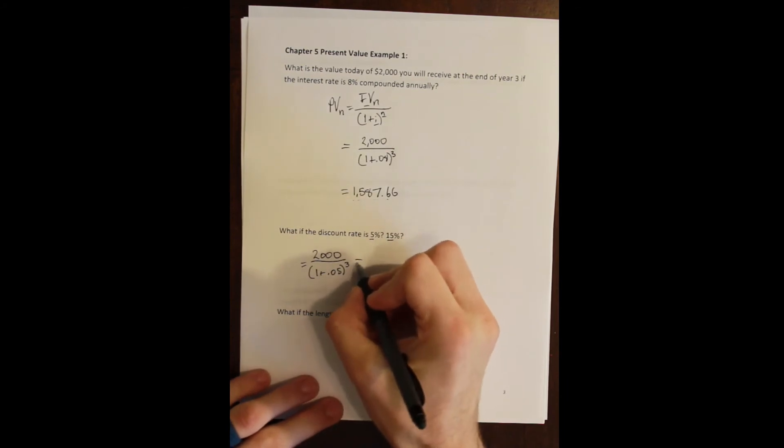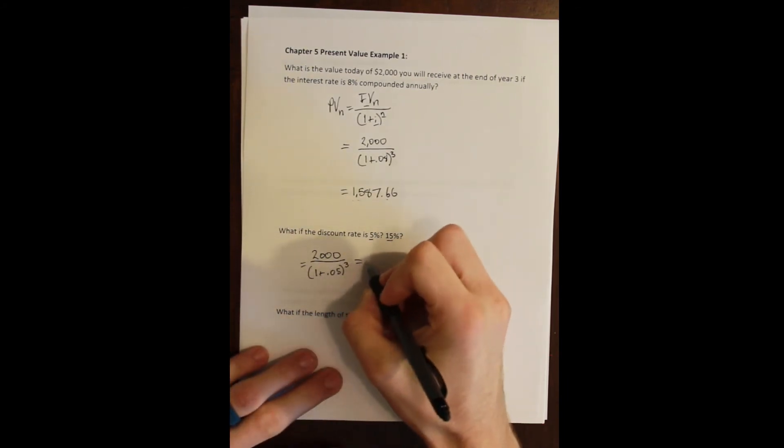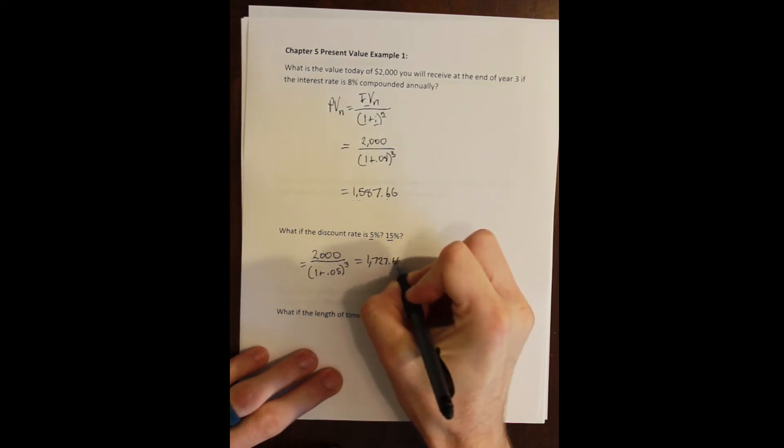But we can always check our work, right? And we can check our work and we can say, okay, $1,727.66. So the present value is higher when the discount rate is lower.